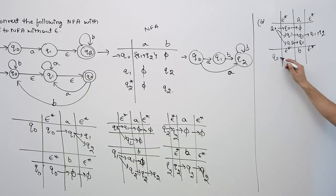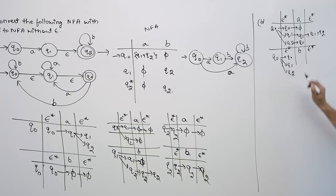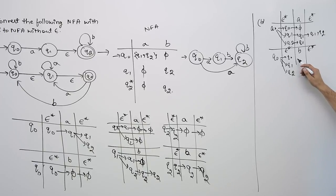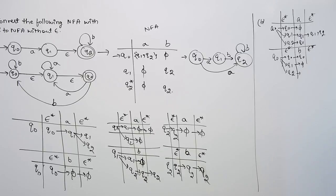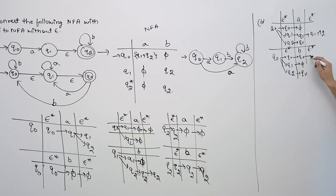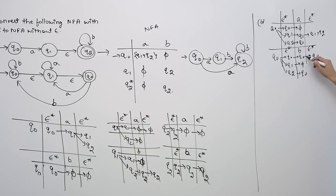Again for Q0 with symbol B: epsilon closure of Q0 is {Q0, Q1, Q2}. On seeing symbol B: on Q0 we go to Q0; on Q1 we are not going anywhere; on Q2 we go to Q0. So epsilon closure of Q0 gives us {Q0, Q1, Q2}.